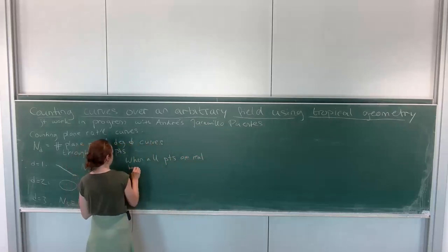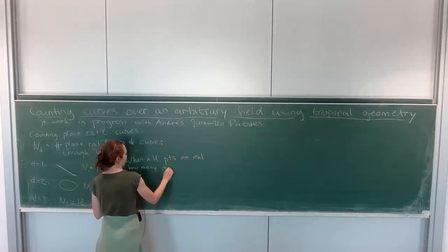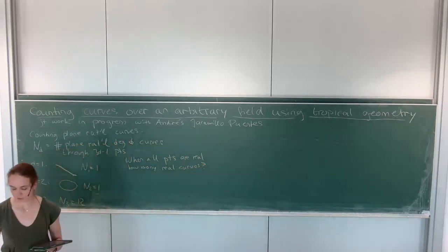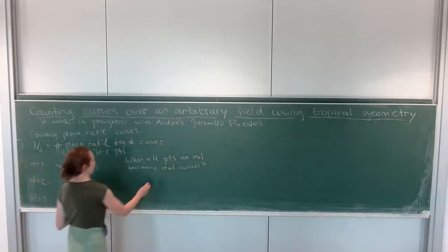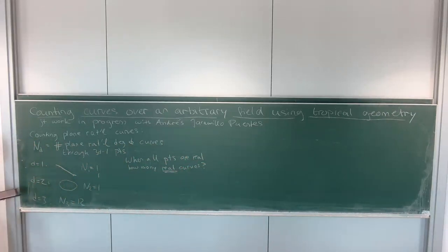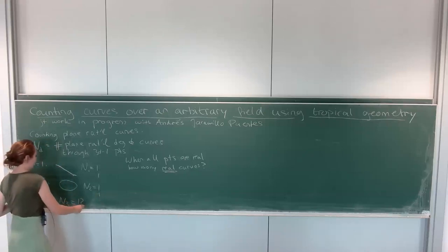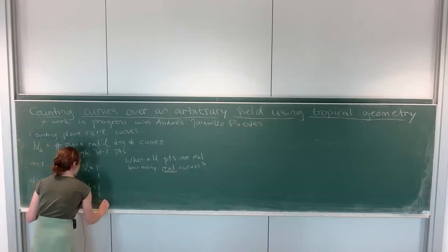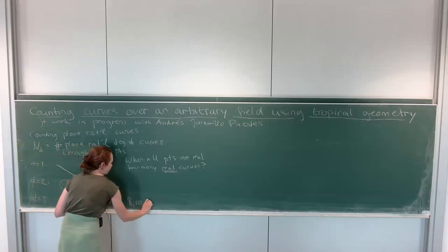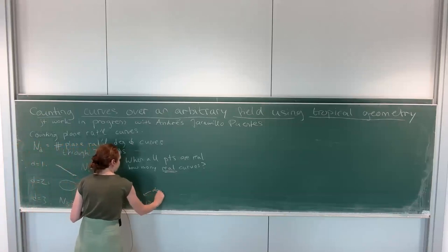So the question is, when all points are real or restricted, in this case today, how many of the curves are real? And this is a different color, but in this case, this number here is still one. The two points are real, there's one real line, this number is still one. But this number is not, it depends on the choice of points. Over R, this is the number which could be 0, 8, 10, or 12. And this depends on configuration of points.